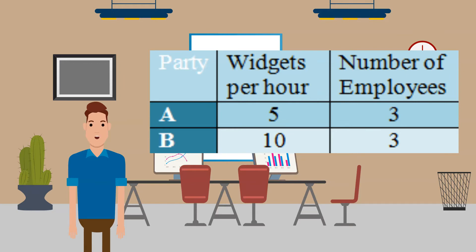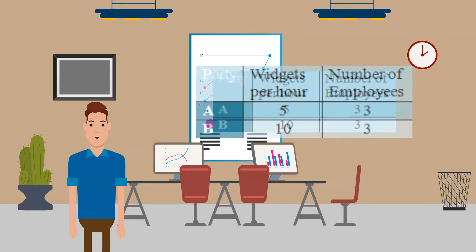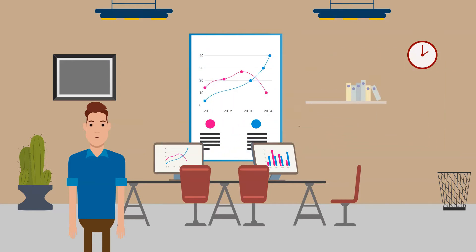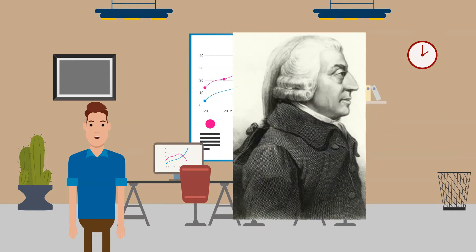If there is no trade, each country will consume what it produces. Adam Smith said that countries should specialize in the goods and services in which they have an absolute advantage. When countries specialize and trade, they can move beyond their production possibilities frontiers and are thus able to consume more goods as a result.